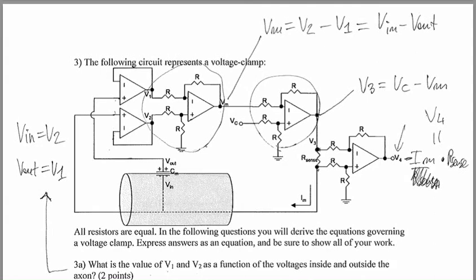Okay? So, the first question is, what is the value of V1 and V2 as a function of the voltages inside and outside the axon? So, well, it turns out that E in is basically V2, because this is just a buffer, and V out is basically V1, because also this is the buffer.